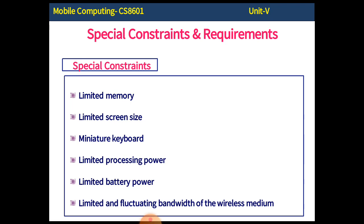Now the special constraints and requirements. Like desktop and laptop computers, the mobile operating system is also specifically designed to do all required operations. The foundation is battery power — making effective utilization and optimization of battery power. This involves limiting memory, screen size, miniature keyboard, limited processing power, limited battery power, and limited and fluctuating bandwidth of the wireless medium. These constraints are rules and regulations to specifically make an effective plan to utilize the resources.